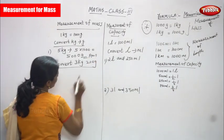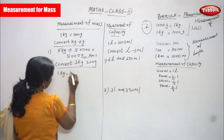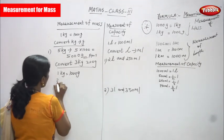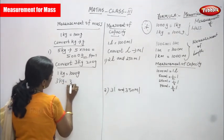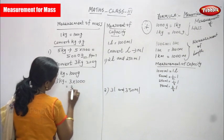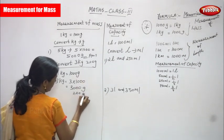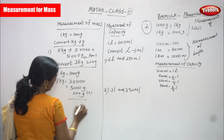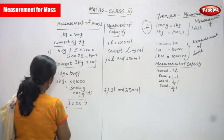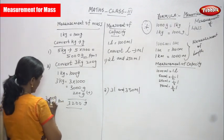Now convert 3 kilogram 200 gram into grams. 1 kilogram is equal to 1000 gram. So 3 kilogram is equal to 3 into 1000, which gives 3000 gram. And 200 is already in grams, so you must add them together. The answer is 3200 gram.